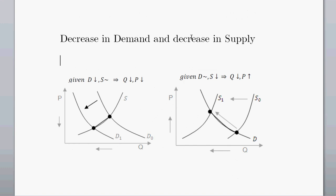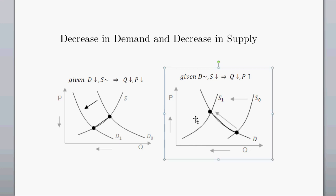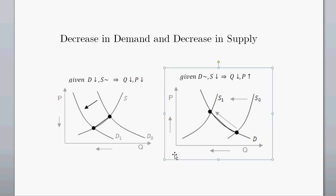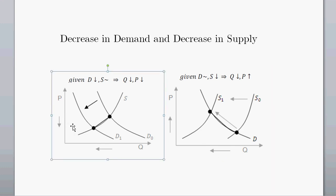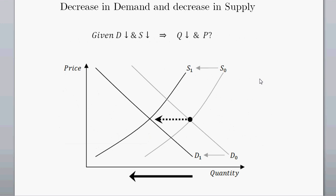Finally, what happens with a decrease in demand and a decrease in supply? With a decrease in demand, both price and quantity have lower equilibrium values. With a decrease in supply — the supply curve shifting in — we see a new higher equilibrium price and a new lower equilibrium quantity. The quantity movements are the same with these two shifts, so when we combine them, we know equilibrium quantity is going to be decreasing. However, the effect on equilibrium price is ambiguous — the demand shift drives price down while the supply shift drives price up.